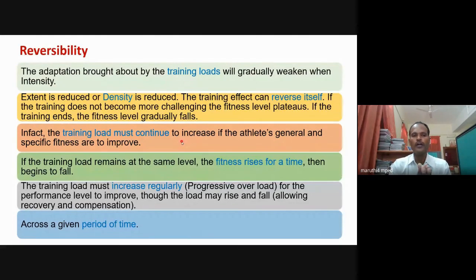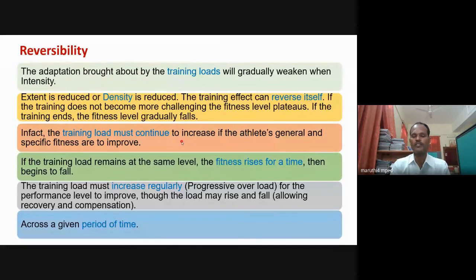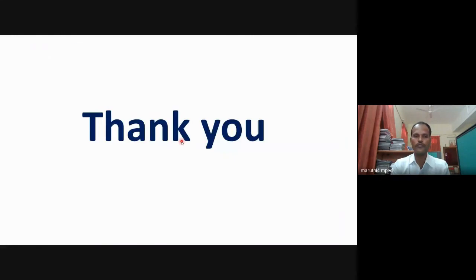So these are the three basic principles of sports training: the first one is the principle of specificity, the second is the principle of overload, and the third is the principle of reversibility. These three important principles you should understand and apply — otherwise we cannot get or increase the performance. These are the basic principles applicable to whatever training protocol you follow and whatever athlete you handle. Thank you very much. We will meet in the next class.